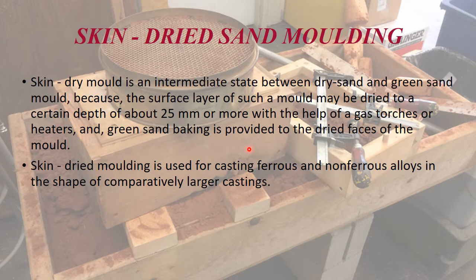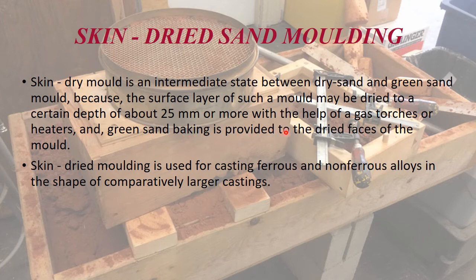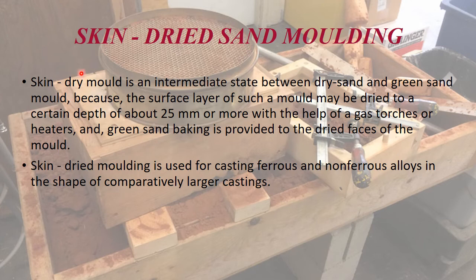Next is skin dried sand molding. A skin dried mold is an intermediate state between dry sand and green sand mold. The surface layer of such a mold is dried to a certain depth of about 25 mm or more with the help of gas torches or heaters, while the interior remains like green sand. It is not too moist and not too dry.